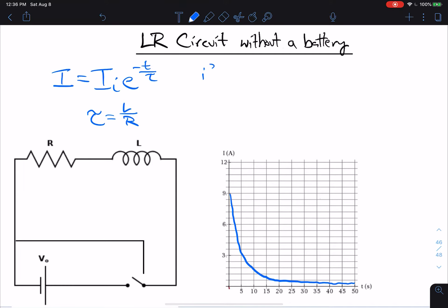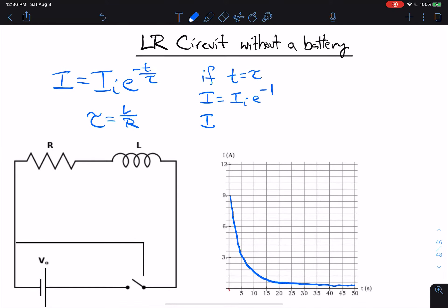And if T equals tau at that moment, then what we get is I equals I initial times E to the negative one. E to the negative one is approximately 0.368. So it's approximately 0.368 of the initial current.